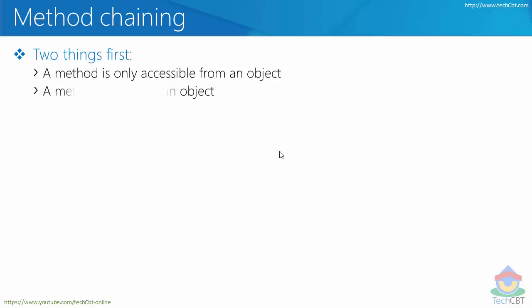The second thing is that a method can return an object. A method may or may not return an object, but in this case it's very important to understand that a method not only can accept parameters but it can also return values or even objects.